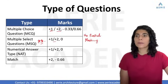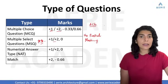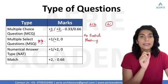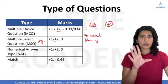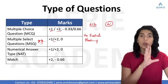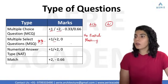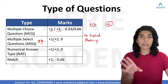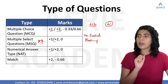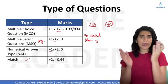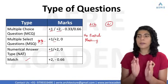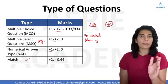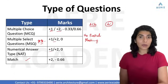What do I mean by no partial marking? If the answer for a question is A, C, D and you have ticked only A and C, you will get 0 marks. Only if you tick all correct options will you get plus 1 or plus 2. But there is no negative marking on MSQ. The next type is NAT — numerical answer type — also with no negative marking, of 1 or 2 marks. Then we have match the following: plus 2 for correct answers and minus 0.66 negative marking on each match question.